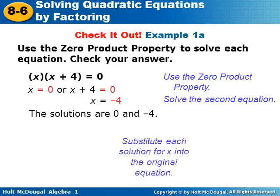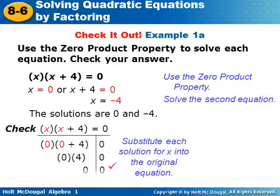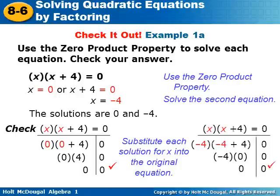We check by substituting each solution for x into the original equation. We get zero times (zero plus four) equals zero times four equals zero. And plugging in negative four, we get negative four times (negative four plus four), which is negative four times zero, and zero equals zero. So we know we've done the answers correctly.